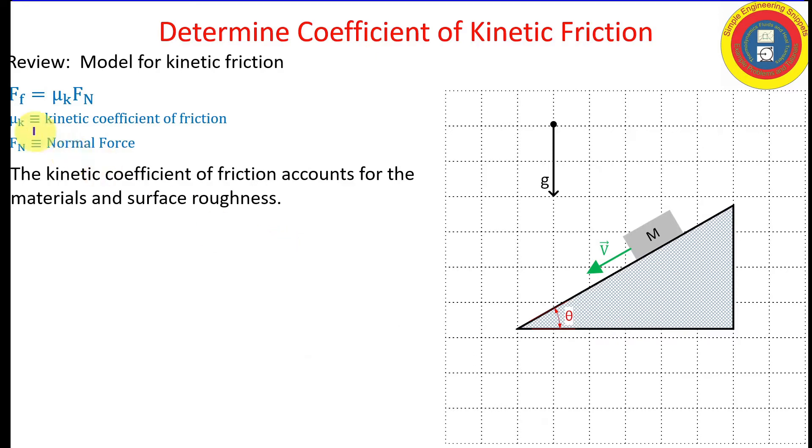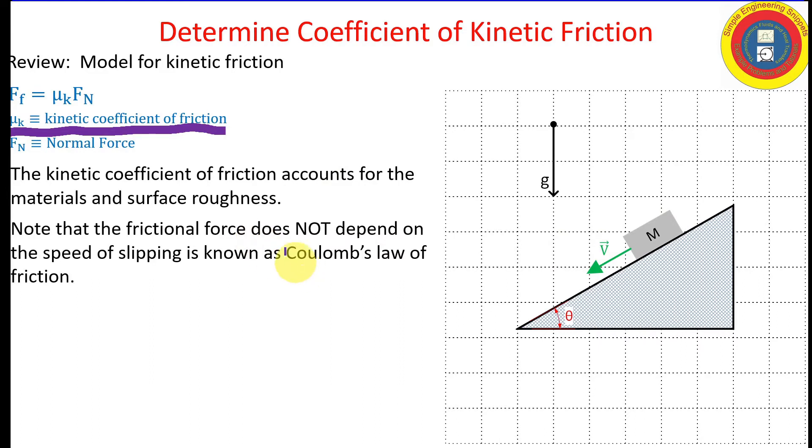The kinetic coefficient of friction accounts for the materials of the two surfaces, as well as things like the surface roughness. And one thing that is surprising in this model is that the actual slipping speed, or in this case, the speed that the block is sliding down the ramp, does not appear in the frictional force. And this is attributed to Coulomb's Law of friction.